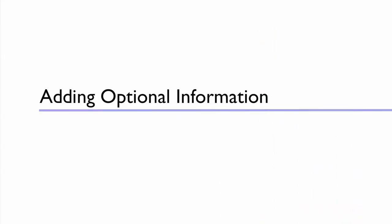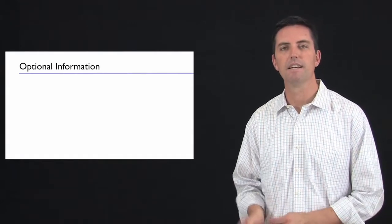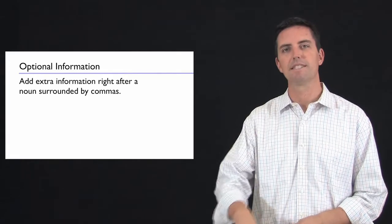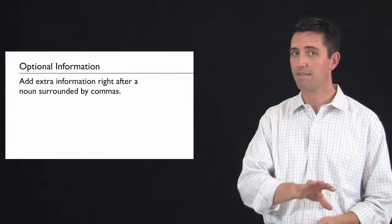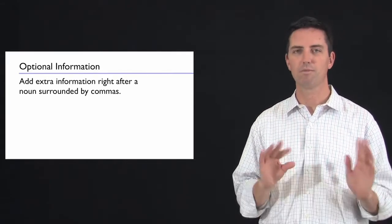There's another way to add extra information to the middle of a sentence. It's technically not an appositive, but I'm going to include it here because it behaves the same way. It's when you have a noun and then you add extra information about that noun right after it and you put it in commas.